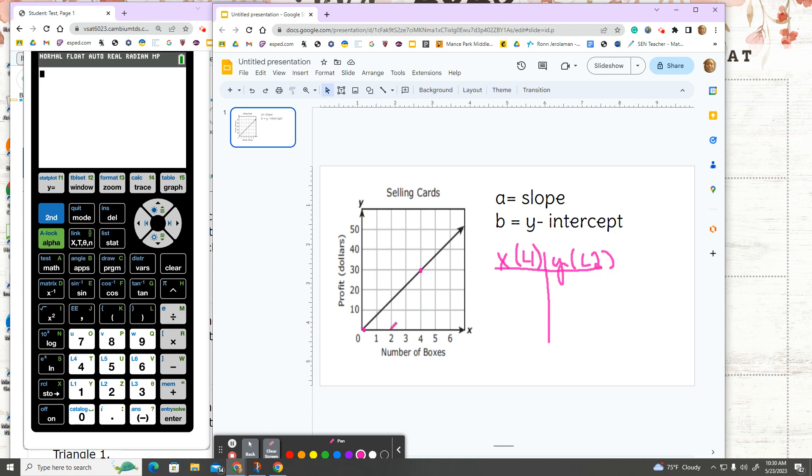Okay, so my first point is (0,0), and then our next point is (4,30).